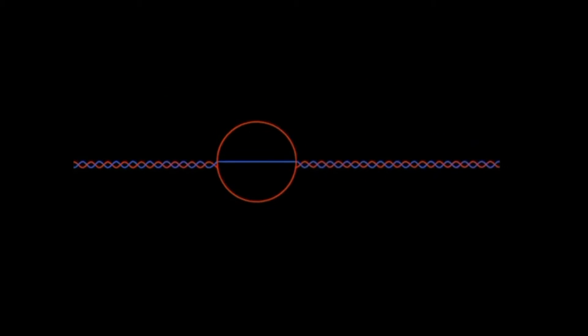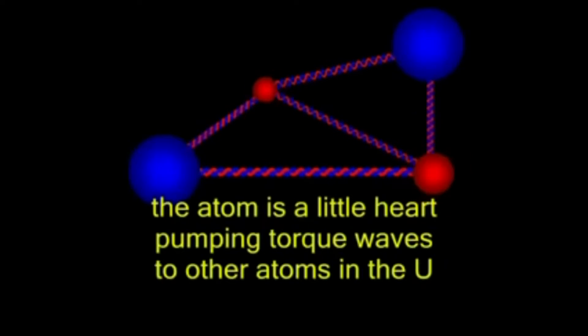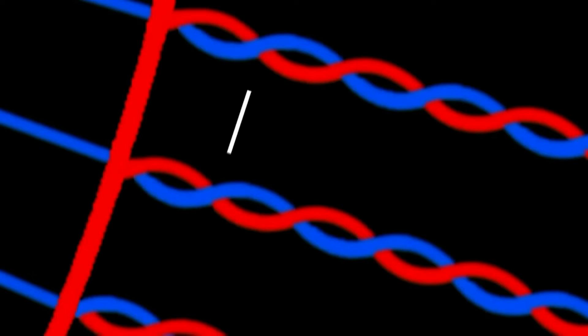The electromagnetic ropes from every atom in the universe converge upon an atom and contribute to its structure. The atom is a tiny heart that expands and contracts, pumping torsion waves to every atom in the universe. When it contracts, it releases a link of rope, a segment known in quantum as a photon.